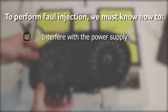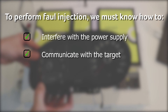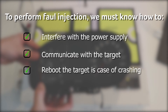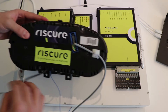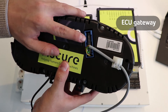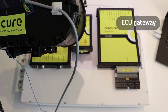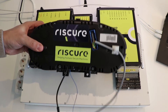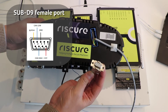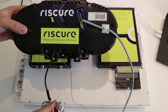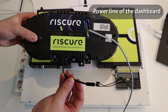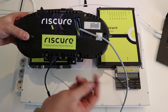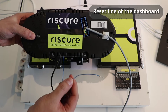How to interfere with the power supply of the target and inject voltage glitches. How to communicate with the target. How to reboot the board if the glitch causes a crash. And finally, how to generate a signal that allows us to glitch at a specific point in the execution. On the back of the dashboard, you can see its ECU gateway, to which we have attached a special cable to establish a communication. This is a SUB-D9 female port, which receives five inputs, and a special line which is used only for powering the microcontroller of the target — because we only want to glitch the component which is responsible for the communication. Lastly, we have discovered the reset line of the device.